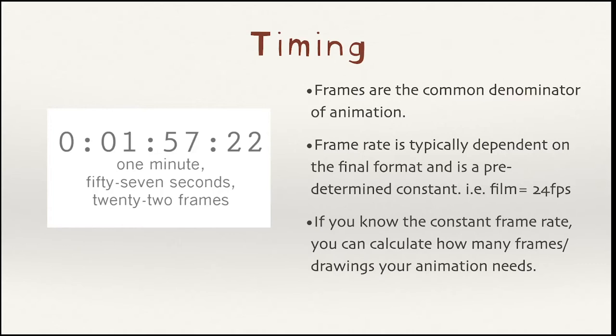In this example on the left, we have a time code. Often in film you'll see time written out in this fashion. On the far left is hours, then minutes, then seconds, and then frames. So this number here represents one minute, 57 seconds, and 22 frames. Now, if you are working at 24 frames per second, you can take this number and do some math to calculate how many frames or drawings you need to fill that duration.